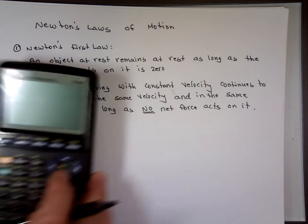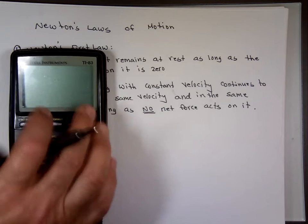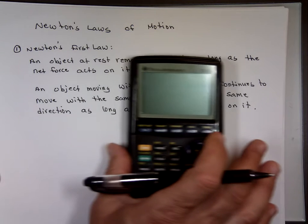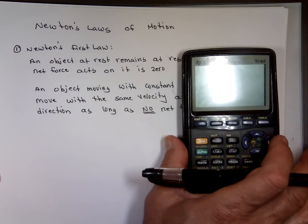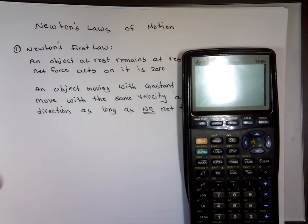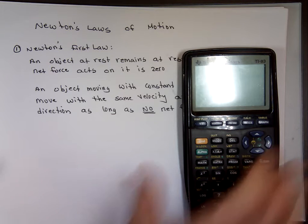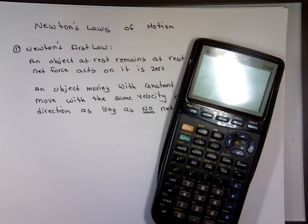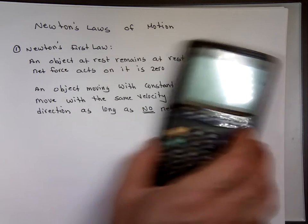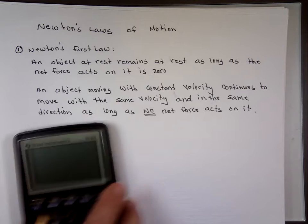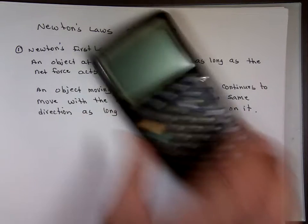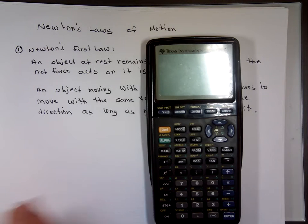If you get this calculator moving, it will continue to move in the same direction at the same speed if there is no net force acting on it. Now, usually if you push a calculator, it's going to stop. Why? This law says it should continue to move. If you're not pushing anymore, what's the force acting on it? There's something making it slow down.